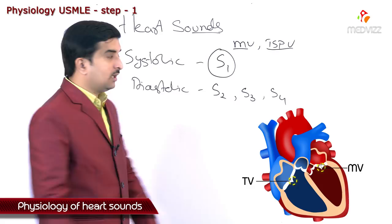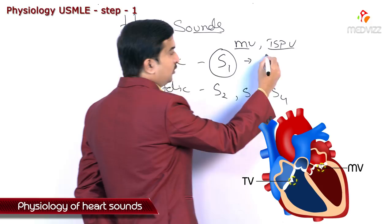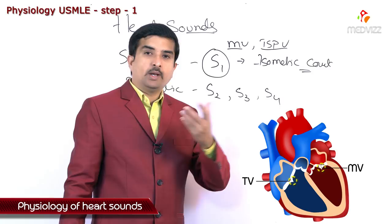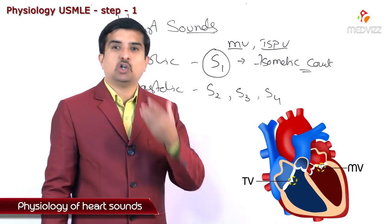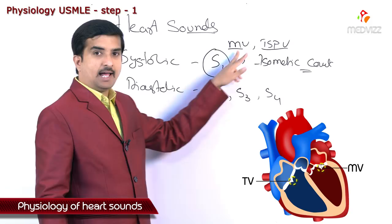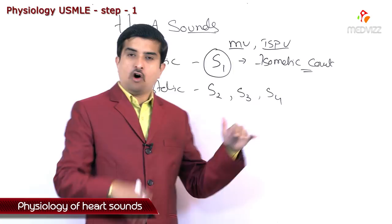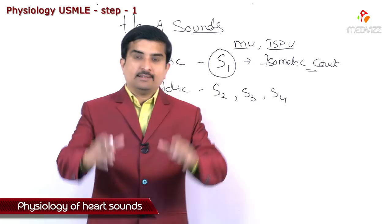The closure of the mitral valve and the tricuspid valve takes place during the isovolumetric contraction period of the cardiac cycle. During isovolumetric contraction, the ventricular pressure greatly increases compared to the atrial pressure, and this is responsible for the closure of the atrioventricular valves — mitral and tricuspid — responsible for the development of S1.